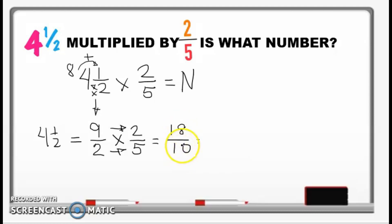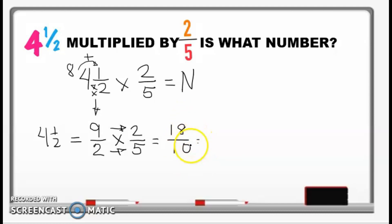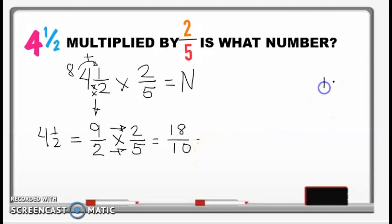So what kind of fraction is this? This is an improper fraction. So what are we going to do? We change it to a mixed fraction. And how do we do that? We divide. So we divide 18 by 10 — because the numerator is larger than the denominator.